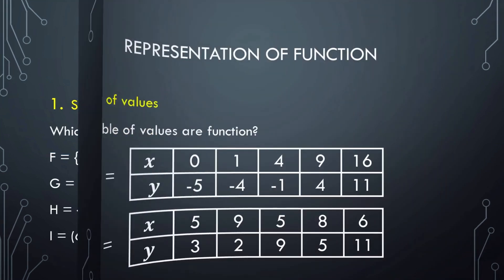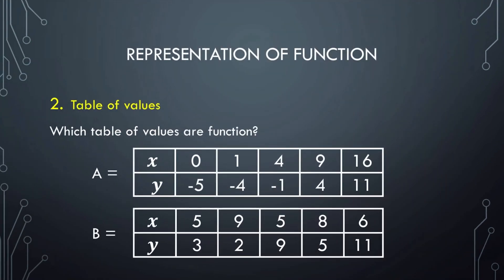The next representation of a function is the table of values. It shows the correspondence between a set of values of X and a set of values of Y in tabular form. Table A is a function because there are no repeated elements in X. Table B is not a function because the ordered pairs (5,3) and (5,9) share the same first element X, which is 5.